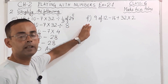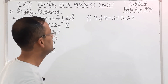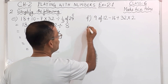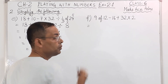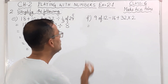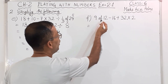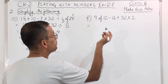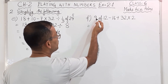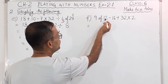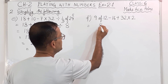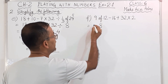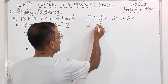Now question number F. Bracket is not there, so 'off' is there, so we will do this one. So 9 of 12 — that means 'off' means multiply — so we will multiply: 9 twos are 18, 1 carry, 9 ones are 9 plus 1 is 10, so 108.